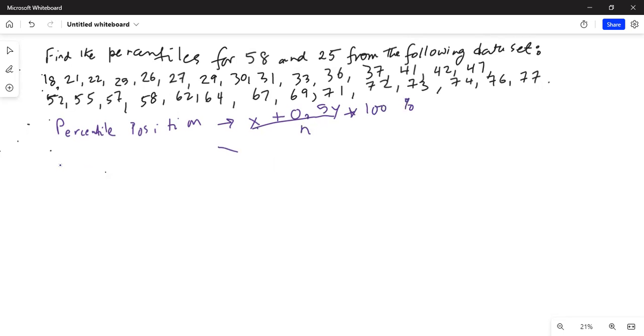What is x? x is the number of numbers below 58 in this case, which is equal to - we counted it - 1, 2, 3, 4, 5, 6, 7, 8, 9, 10, 11, 12, 13, 14, 15, 16, 17, and 18. So number of numbers below 58 is 18 in the data set.